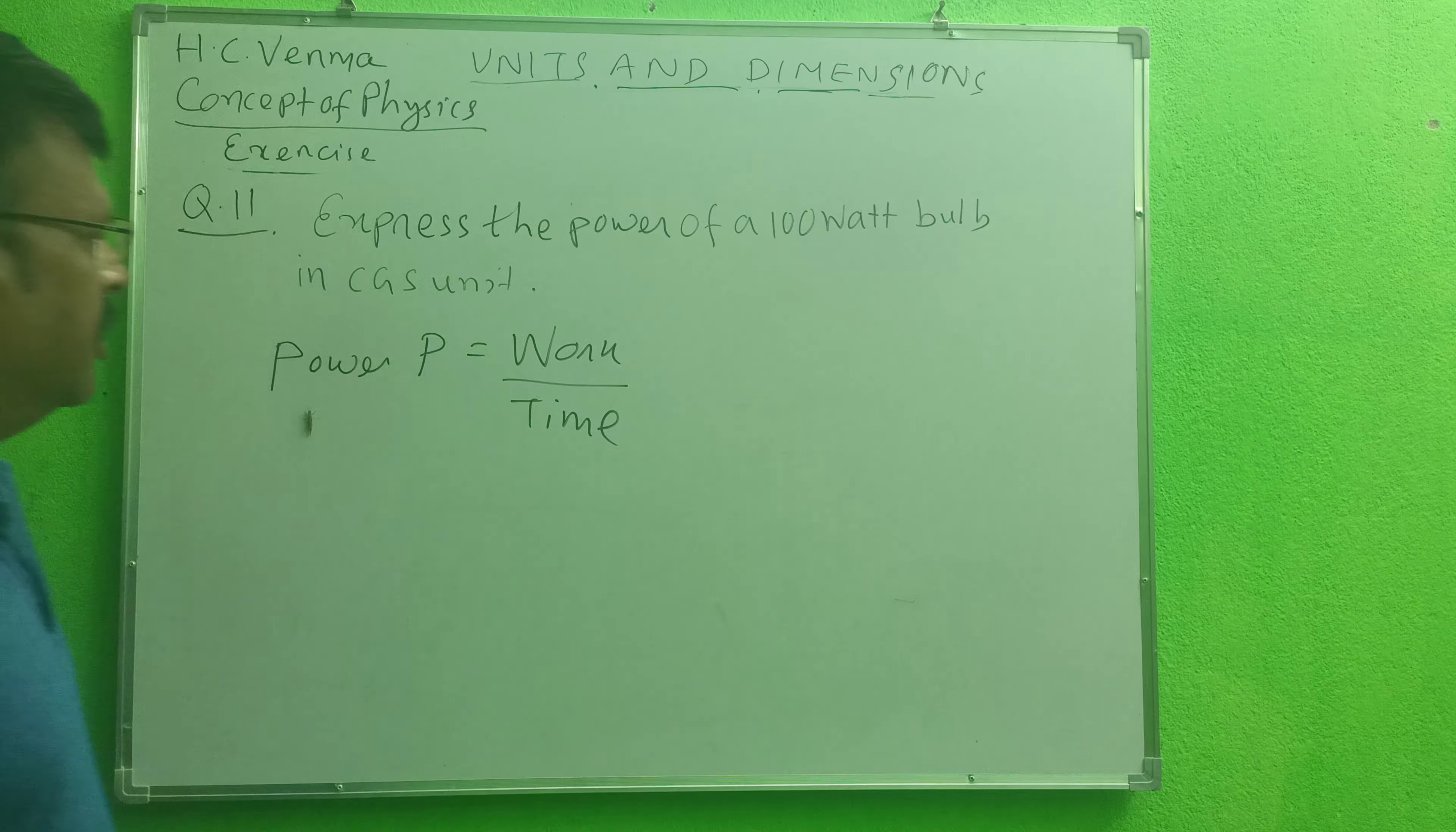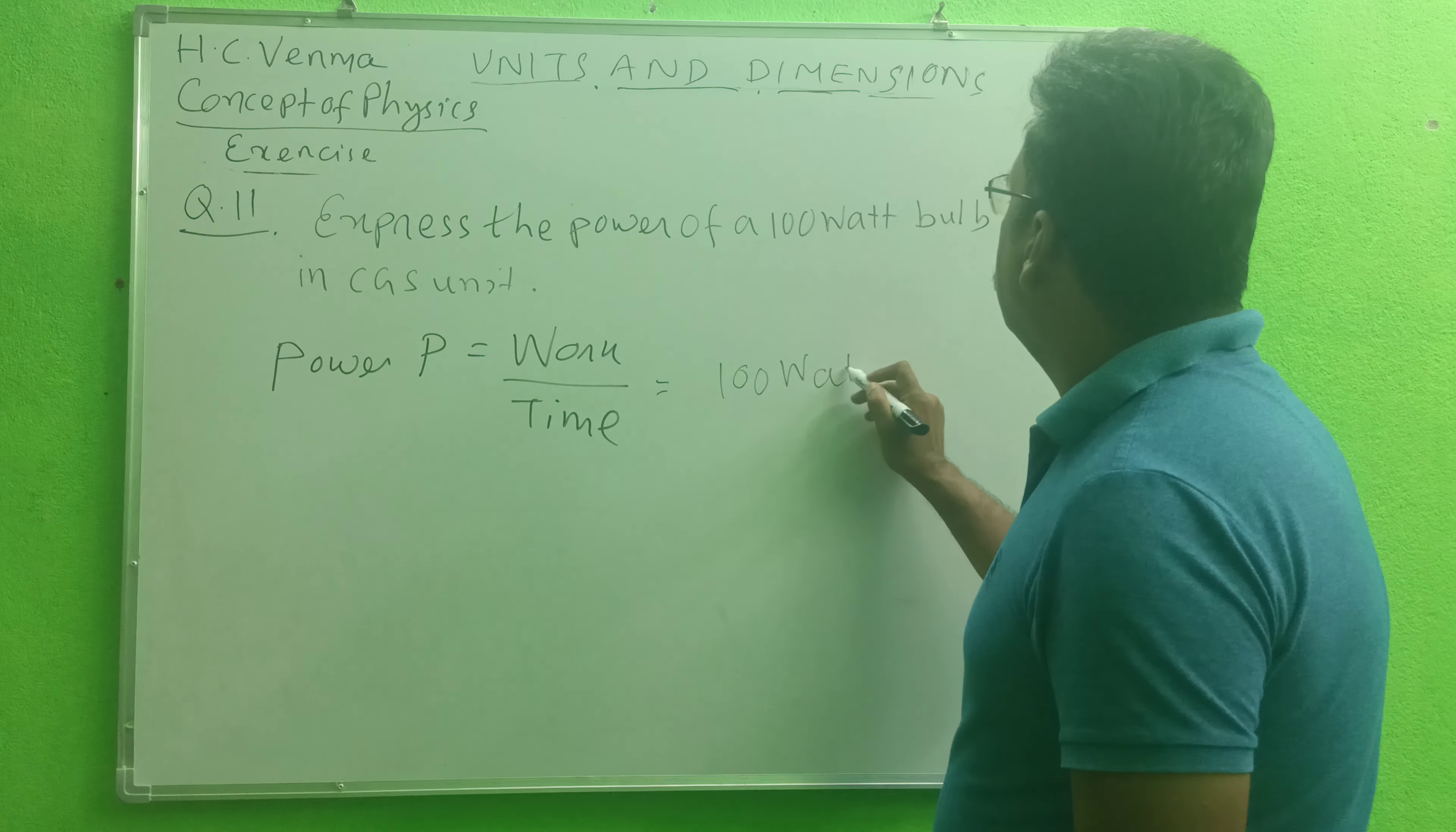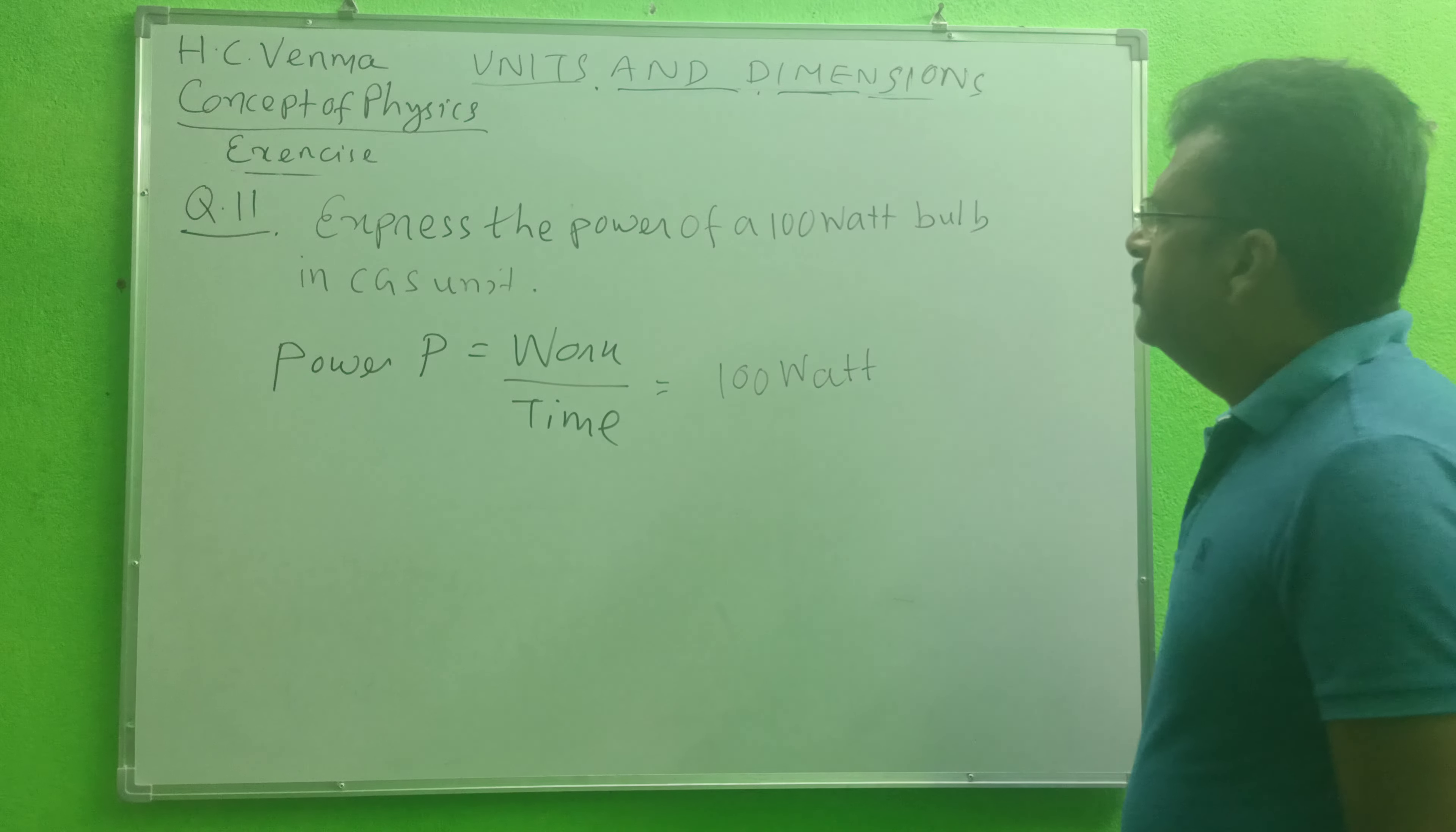The formula you know - the rate of doing work of a body is called its power, and this is equal to 100 watt, the power of the electric bulb. This means...